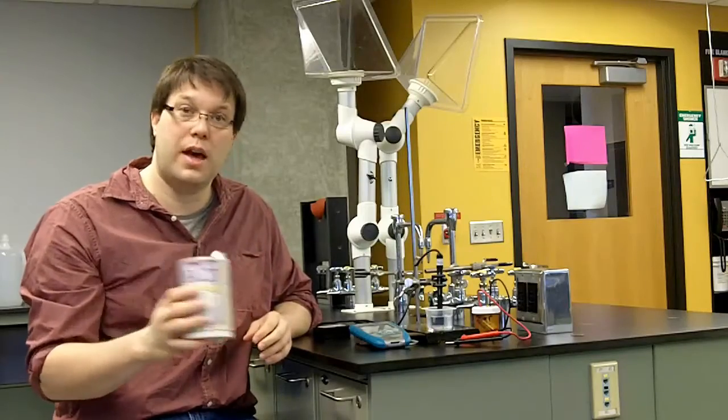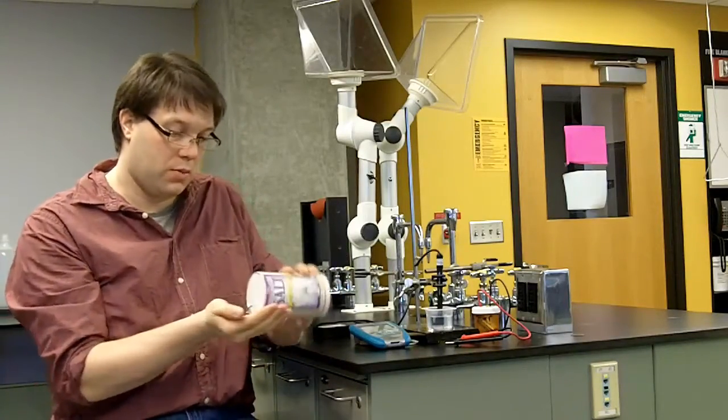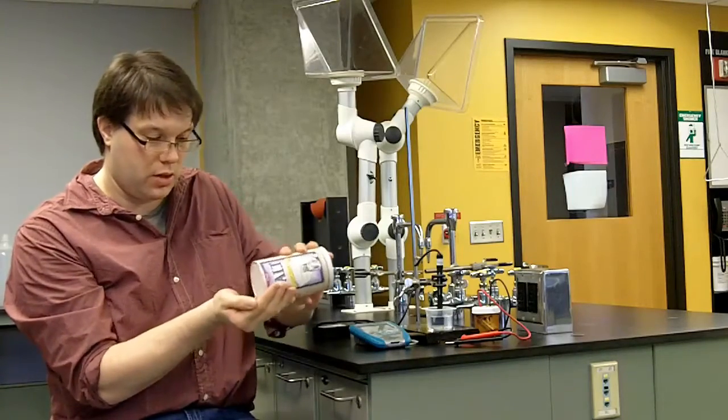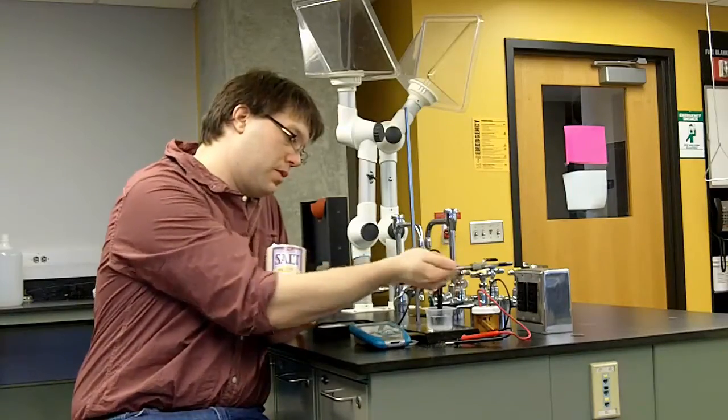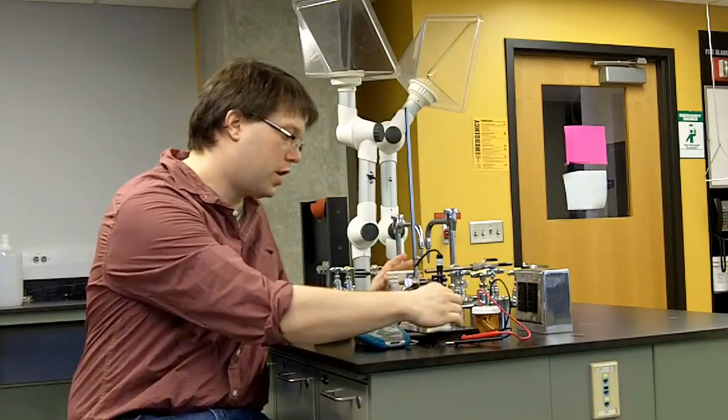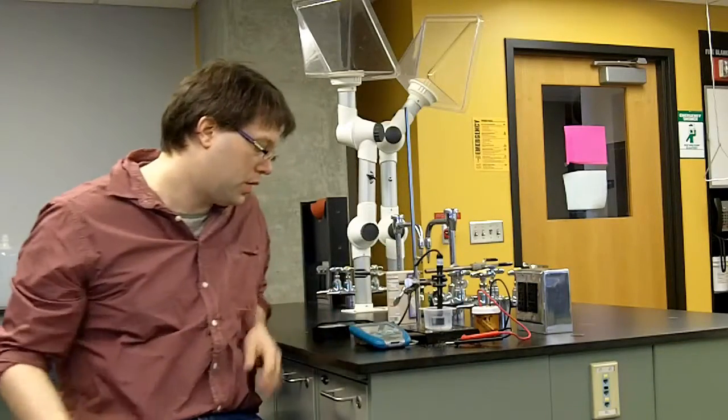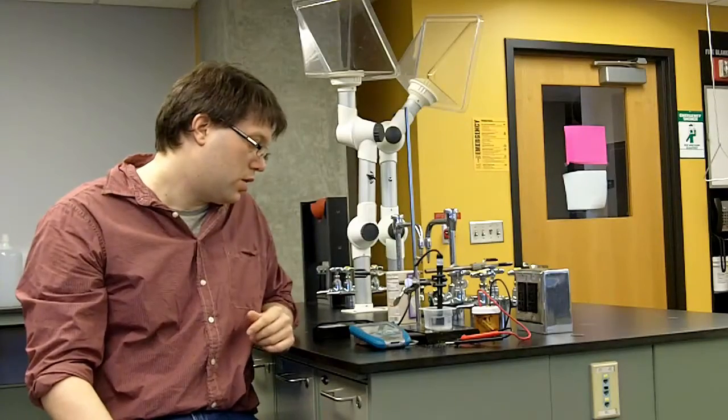So to make it conductive what we can do is just add a little bit of salt. This is just normal table salt and we will just sprinkle some of it in. I will put a little bit in my hand here and then sprinkle some in. Give it a second to dissolve. Kind of shake it up a little bit.